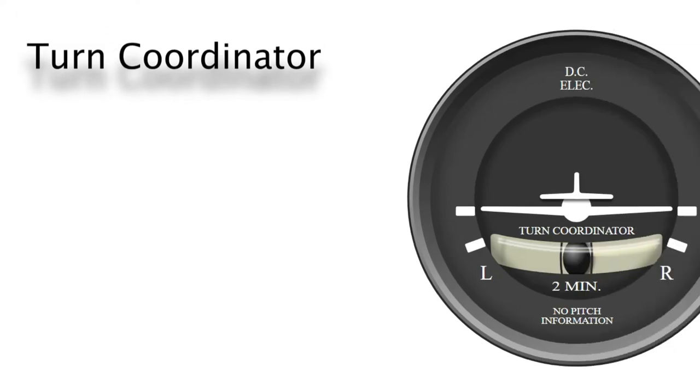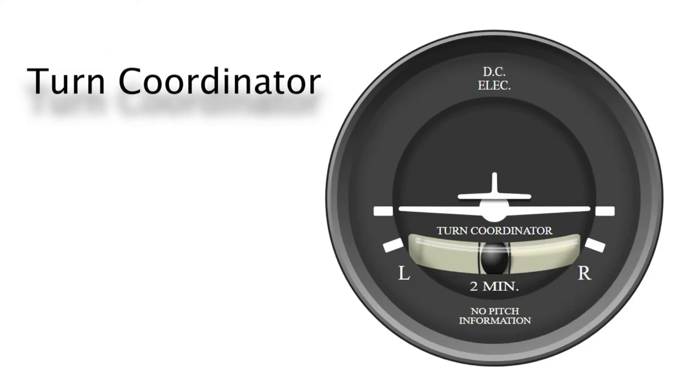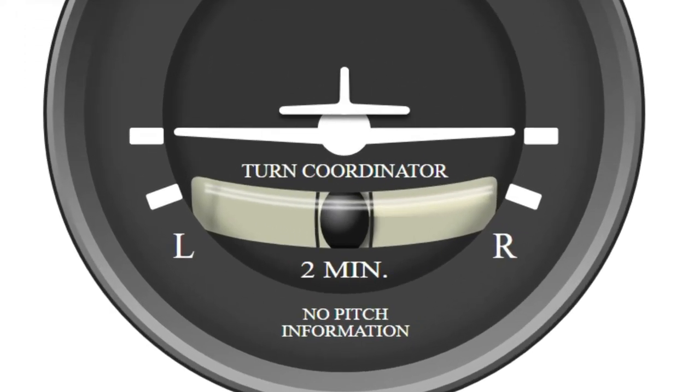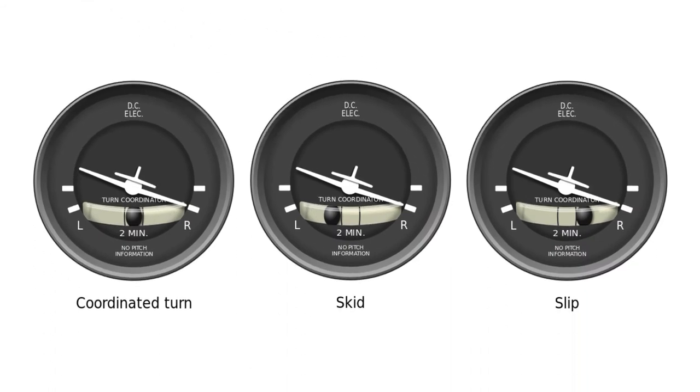Another gyroscopic instrument we are going to talk about is the turn coordinator. As you see, there is a ball in a fluid at the bottom. When you are turning, that ball tells you whether your turn is coordinated or not. In other words, whether you are skidding or slipping, or neither of them. In fact, it indicates the quality of the turn.